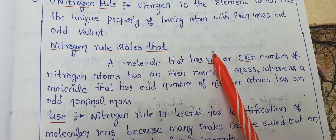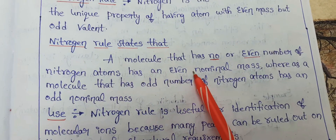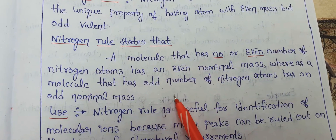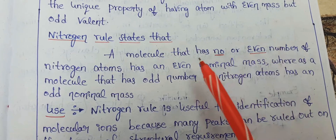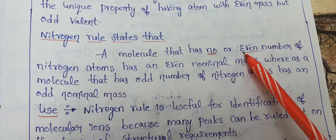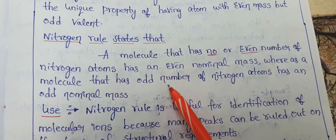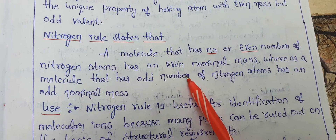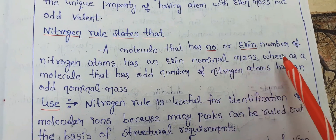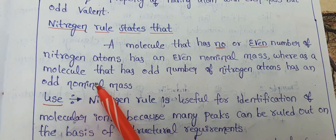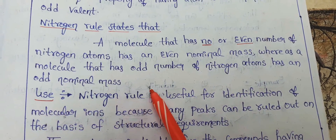The nitrogen rule states that a molecule that has an even number of nitrogen atoms, or where nitrogen atoms may be absent, will have an even nominal mass. Whereas a molecule that has an odd number of nitrogen atoms has an odd nominal mass.